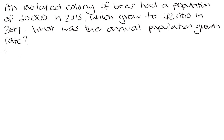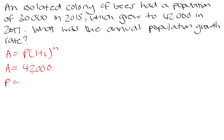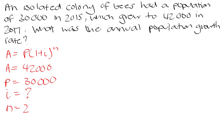We're still going to use the compound interest formula, just solving for a different variable. A is the final population: 42,000. P is the initial population: 30,000. i is the population growth rate — that is what we are solving for. n is 2 years, because two years elapsed from 2015 to 2017. Plugging in: 42,000 = 30,000 × (1 + i)^2.